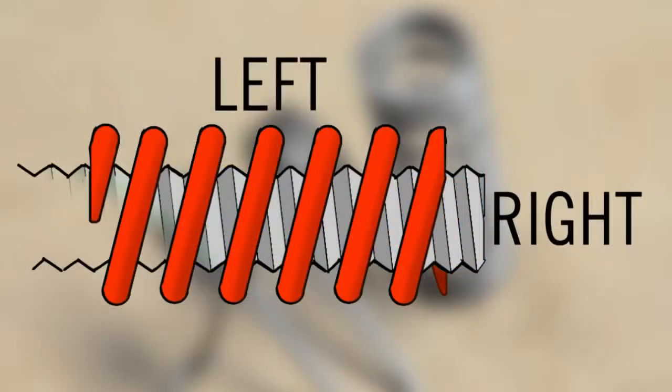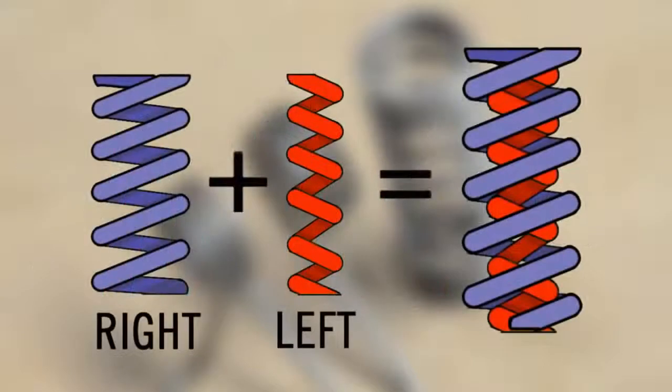Finally, be sure to pay attention to the handedness of your springs. Springs used on bolts or threaded rod should have the opposite wrap direction to keep them from binding. The same goes for nested springs.